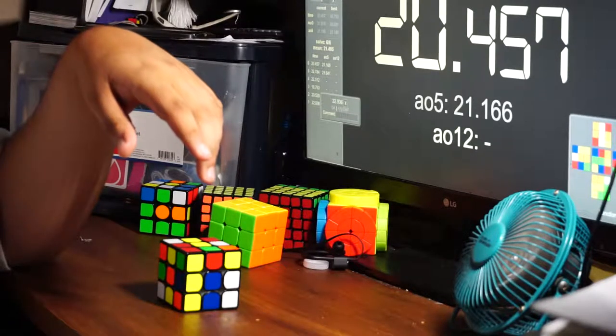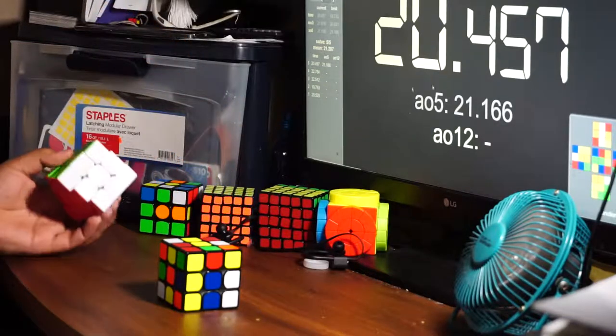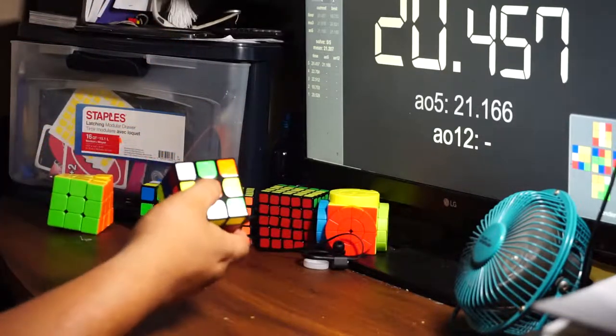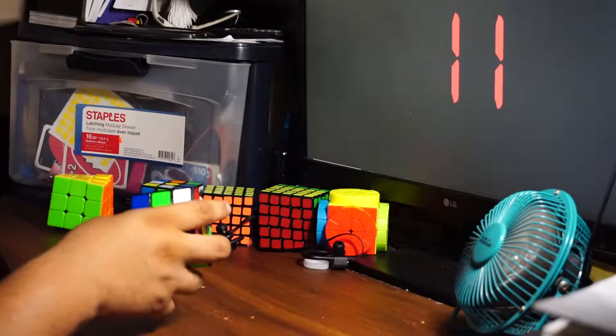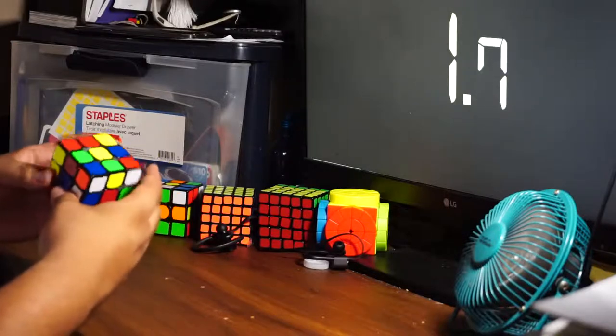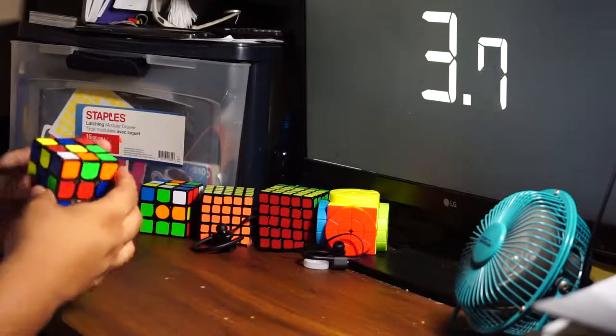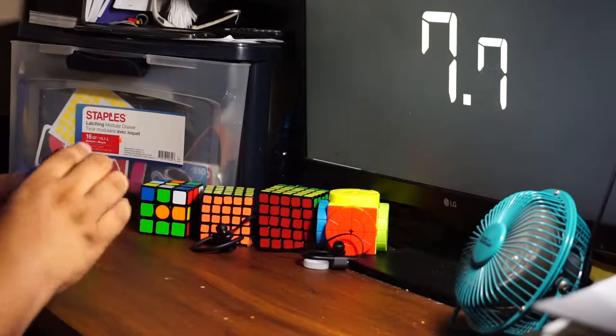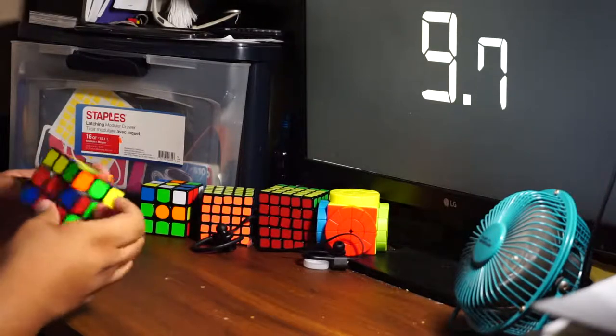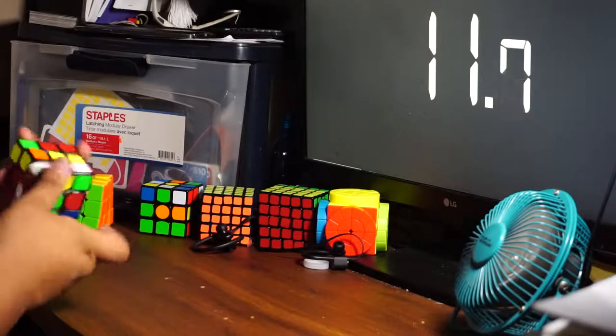Sometimes I finish PLL and then I'm sitting there for one second going, okay, I have to do a U2 or a U prime. My U's and my U primes are also something that I need to handle. I need to know if I need to do a U or a U2, I can't be doing U primes anymore. You can see in some of these solves that I'm actually doing that. And that's something that it's a habit now and I really got to fix that.